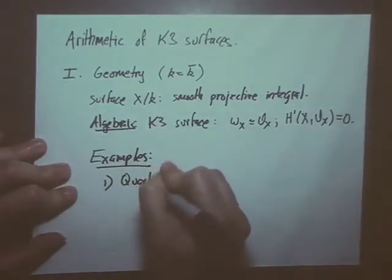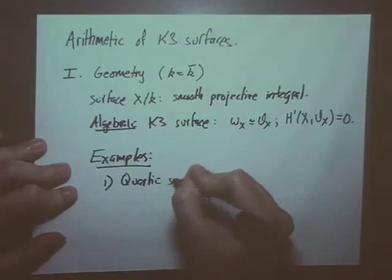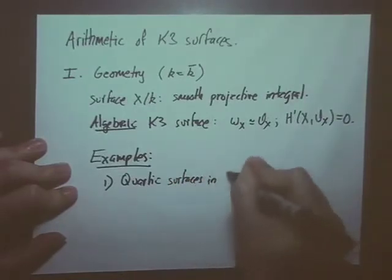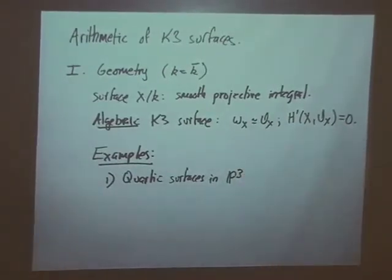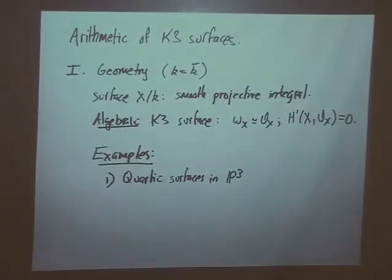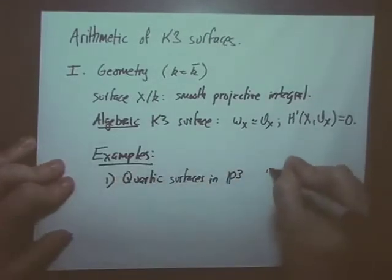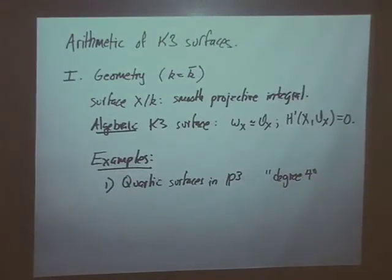Let me start with some examples because the definition is a little bit dry. A nice easy example is quartic surfaces in P3. The canonical sheaf is going to be O_X of d minus n minus 1, and d is 4 and n is 3, so 4 minus 3 minus 1 is 0, so the canonical sheaf is O_X. It takes a bit more to see that H1 is trivial but that's one of the exercises in the lecture notes. So these are called degree 4 — they are surfaces of degree 4 in projective 3-space.